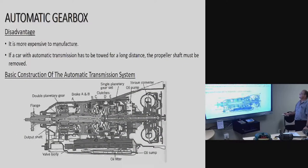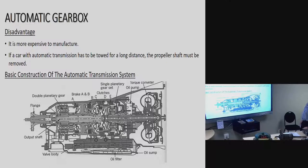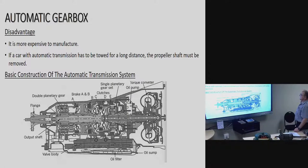The system dampens all engine torsional vibration. Disadvantages: the automatic gearbox is more expensive to manufacture. If a car with automatic transmission has to be towed for a long distance, the propeller shaft — which we know as a prop shaft — must be removed.